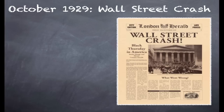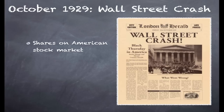It began in October of 1929 in New York in the USA with the so-called Wall Street Crash. What happened was that a lot of people had bought shares in the American stock market — not just rich people, but ordinary people had bought shares as well. And the shares in the stock market became overvalued. At some point in October of 1929, people started to realise the shares were worth too much and they started to sell them, causing the shares to go down in value.